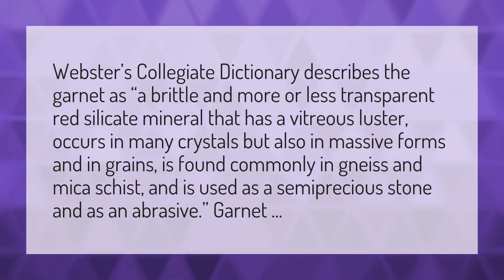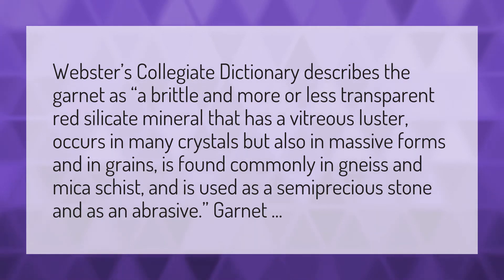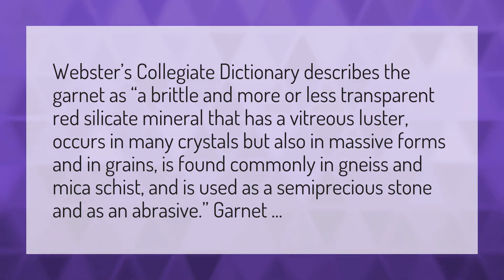Webster's Collegiate Dictionary describes the garnet as a brittle and more or less transparent red silicate mineral that has a vitreous luster, occurs in many crystals but also in massive forms and in grains, is found commonly in gneiss and mica schist, and is used as a semi-precious stone and as an abrasive.